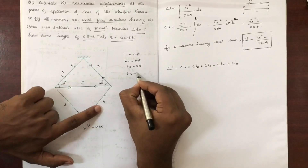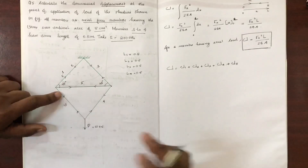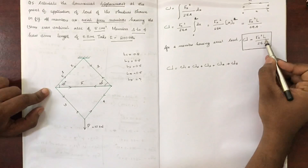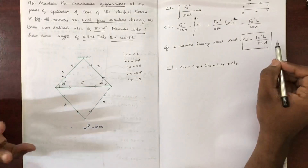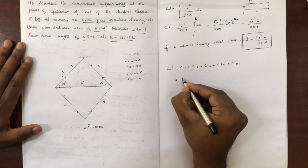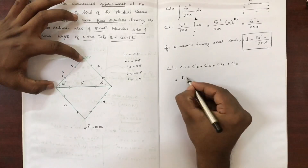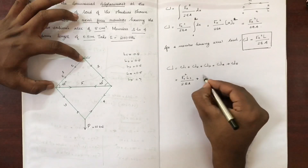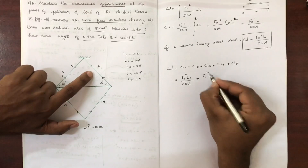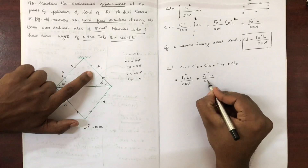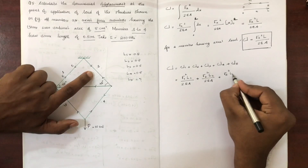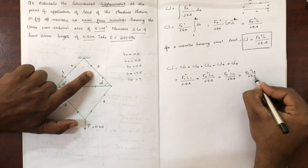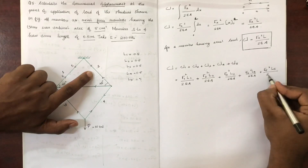Now, we have L5 to find. This area is called Fx. Let's say the first member force is F1. So U1 is F1 squared times L1 divided by 2EA. Plus U2 is F2 squared times L2 divided by 2EA. Plus F3 squared divided by 2EA. Plus F4 squared times L4 divided by 2EA. Plus F5 squared times L5 divided by 2EA.